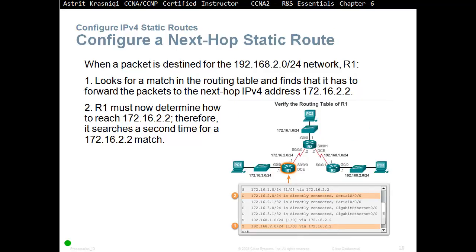When a packet is destined for 192.168.2.0, R1 will look for a match in the routing table and find it has to forward the packet to next hop IP address 172.16.2.2. Router 1 must then determine how to reach 172.16.2.2, so it searches a second time. To get to 192.168.2.0, it says use the IP address of Router 2. But now it has to do another lookup to find out how to get to Router 2's address, finding that 2.2 is on that network and to reach it, R1 must exit through serial 0/0/0.